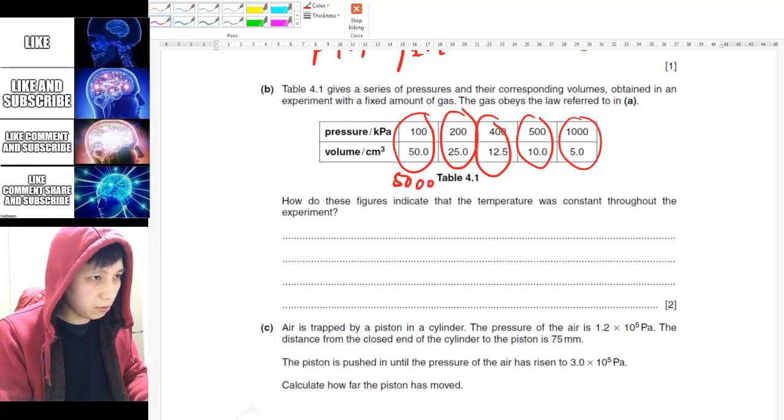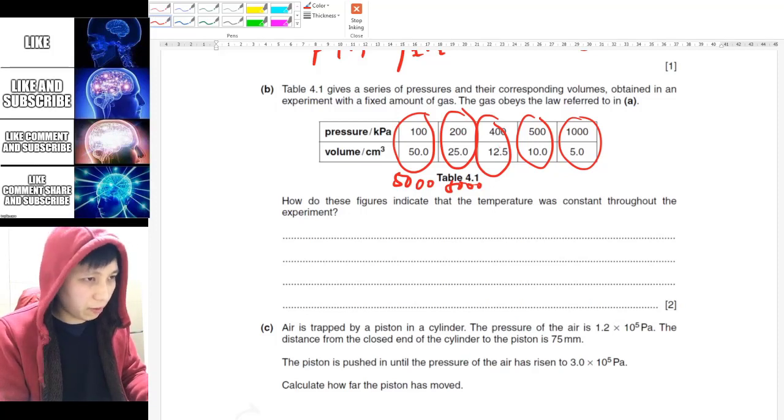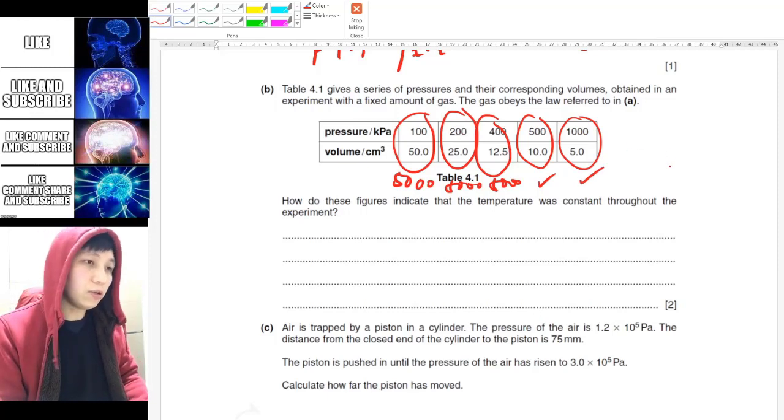So for this one, it's 5000. This one also, well, 5000. Basically this one should be 5000 also. You can use your calculator. This one also and this one also. So it's always 5000.